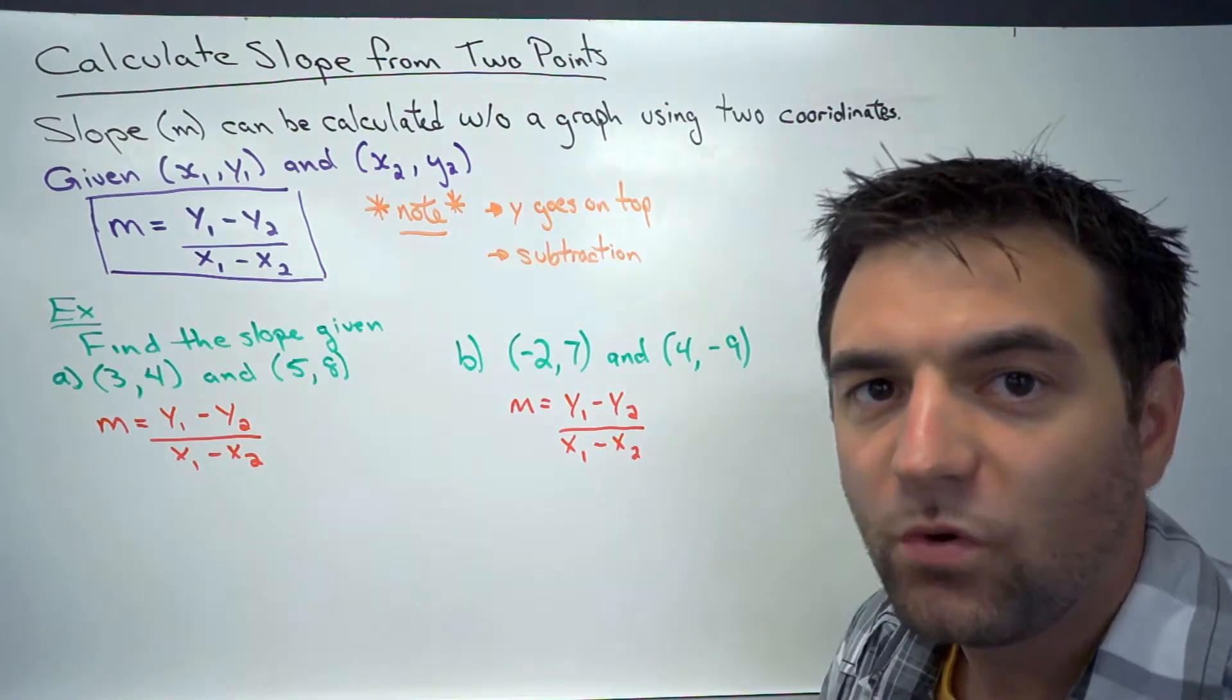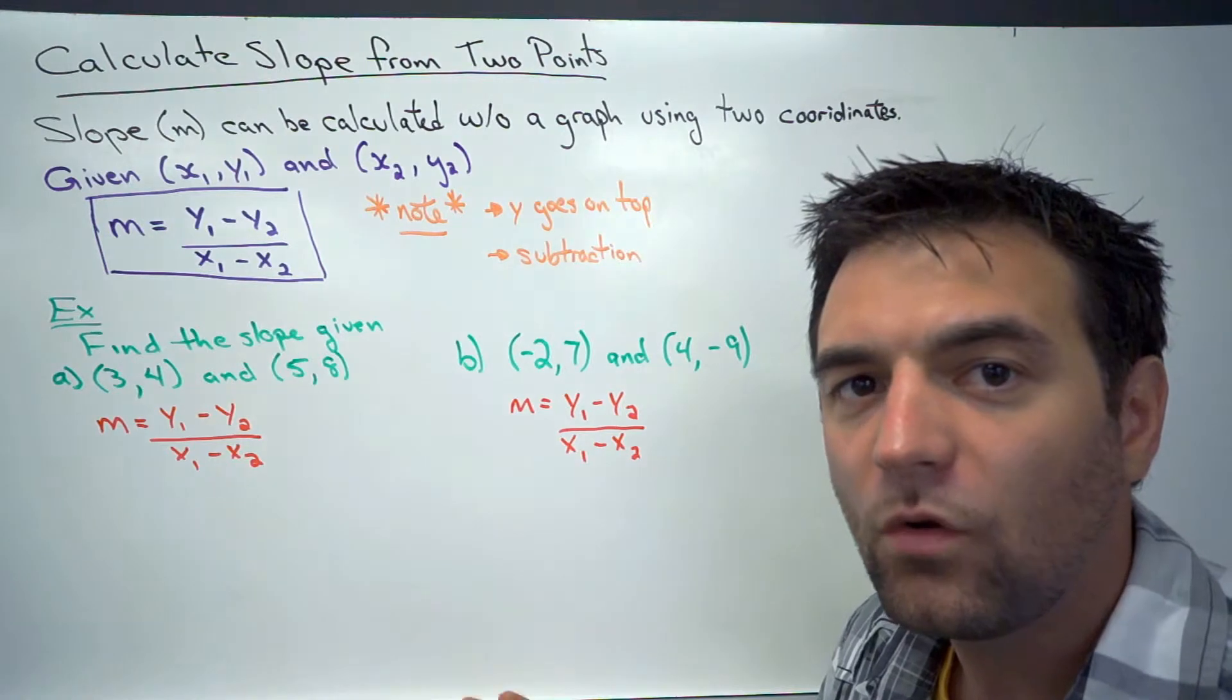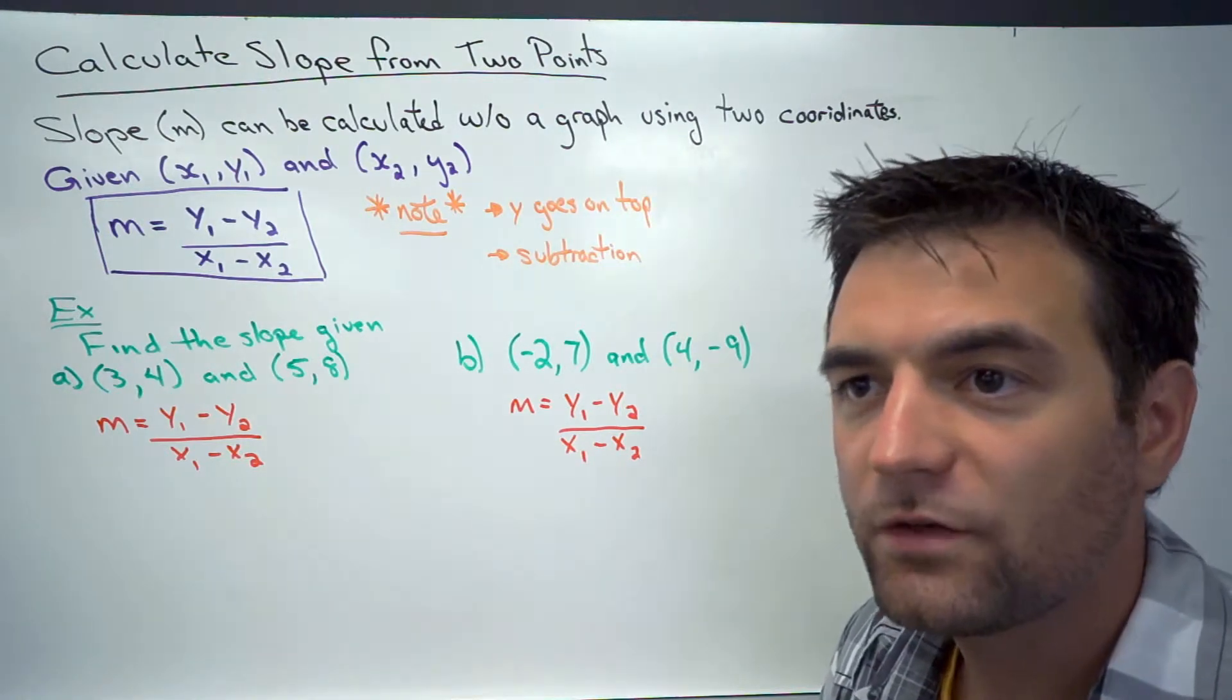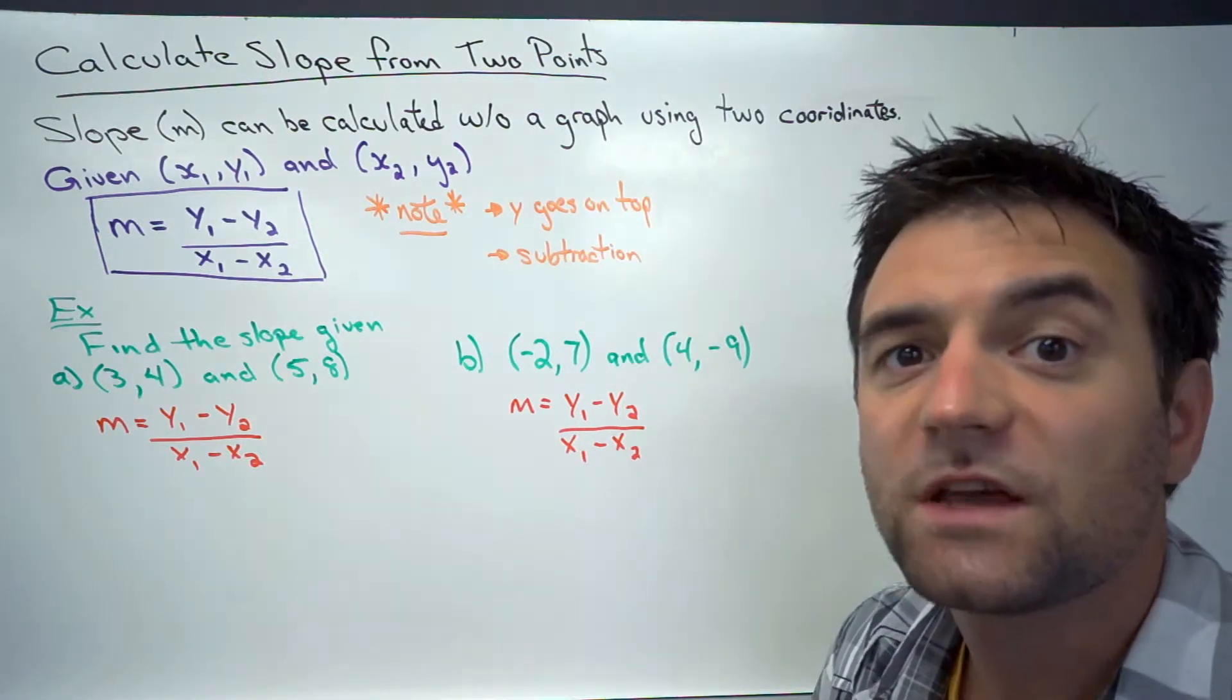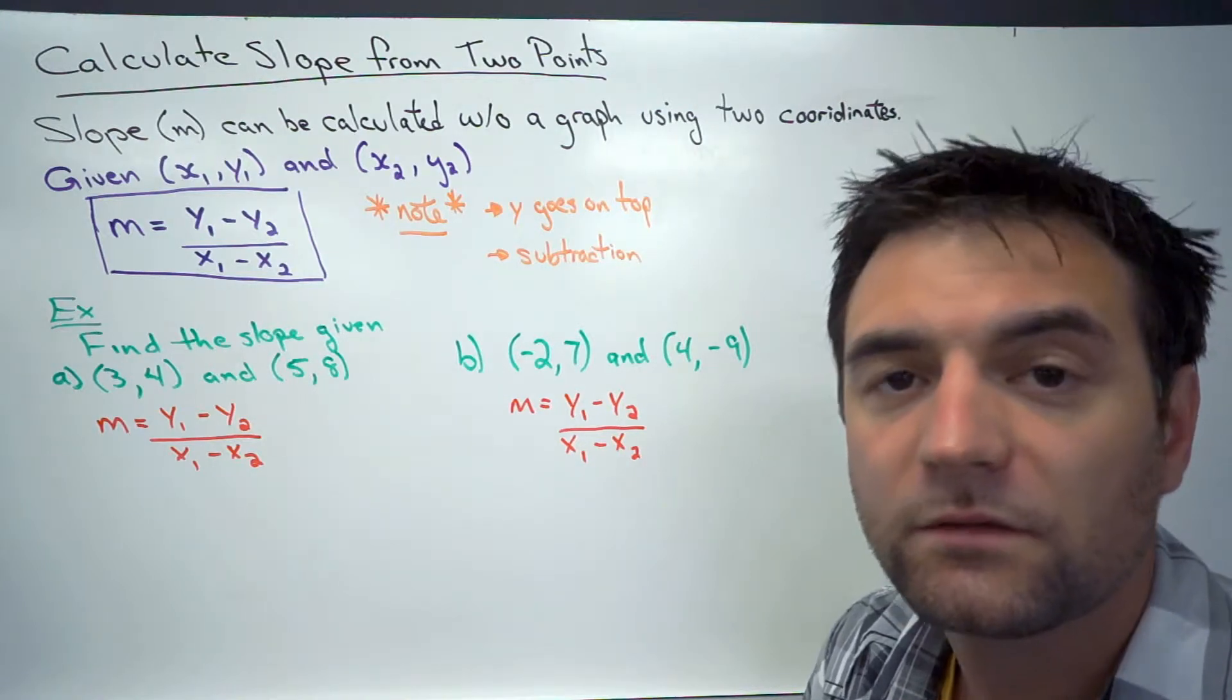Now these coordinates could just be two points x, y that you're given, or they could be two values taken from, two pairs of values taken from a t-chart.